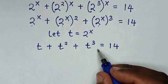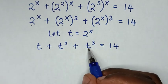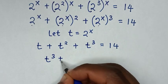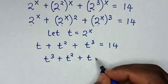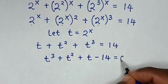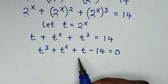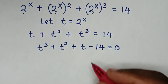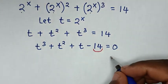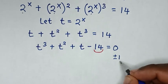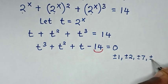Then we take 14 to the left side, so we start with the largest power in decreasing order: t cubed plus t squared plus t minus 14 is equal to 0. Then from this cubic equation we solve it by grouping and factorization. The factors of 14 are: plus or minus 1, plus or minus 2, plus or minus 7, and plus or minus 14.